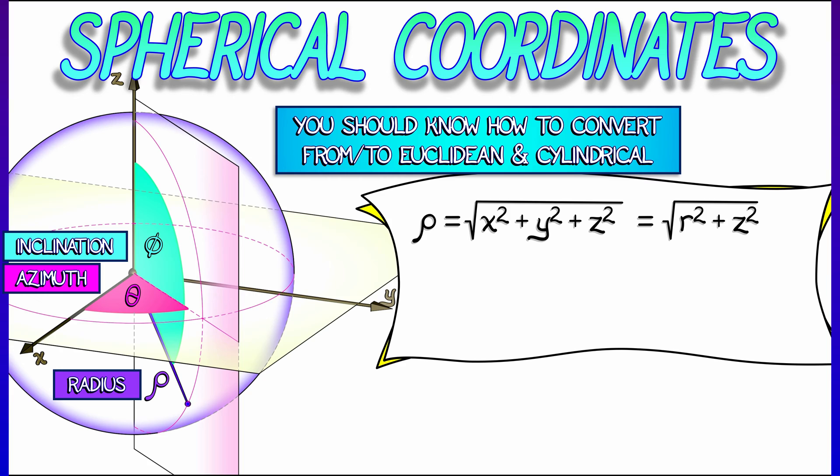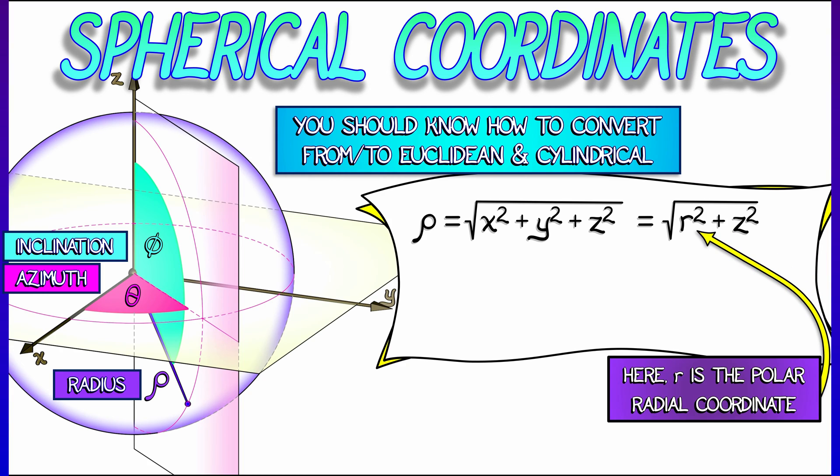You could express this in cylindrical coordinates as square root of r squared plus z squared, where r is that polar radial coordinate. And just as with cylindrical or polar coordinates, theta is arctan of y over x.